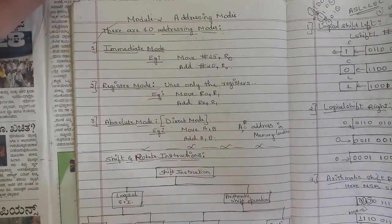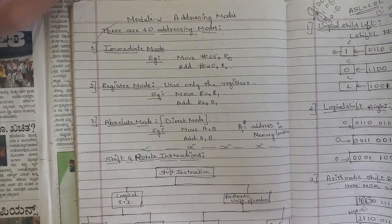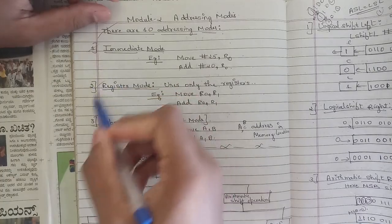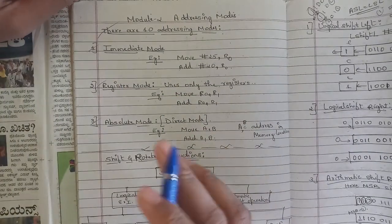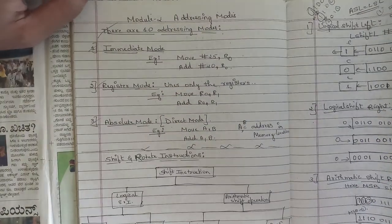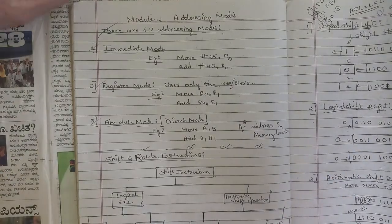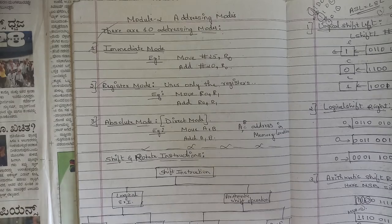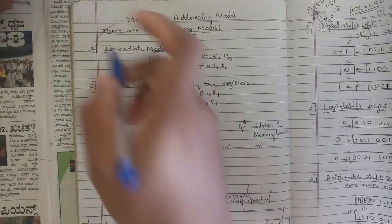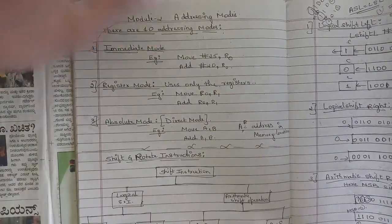From module 2, one question related to addressing modes will be asked — a short question to explain any five addressing modes. We have covered three addressing modes here; the rest are available in the model paper solutions on our channel page. One question related to addressing modes will definitely be asked.